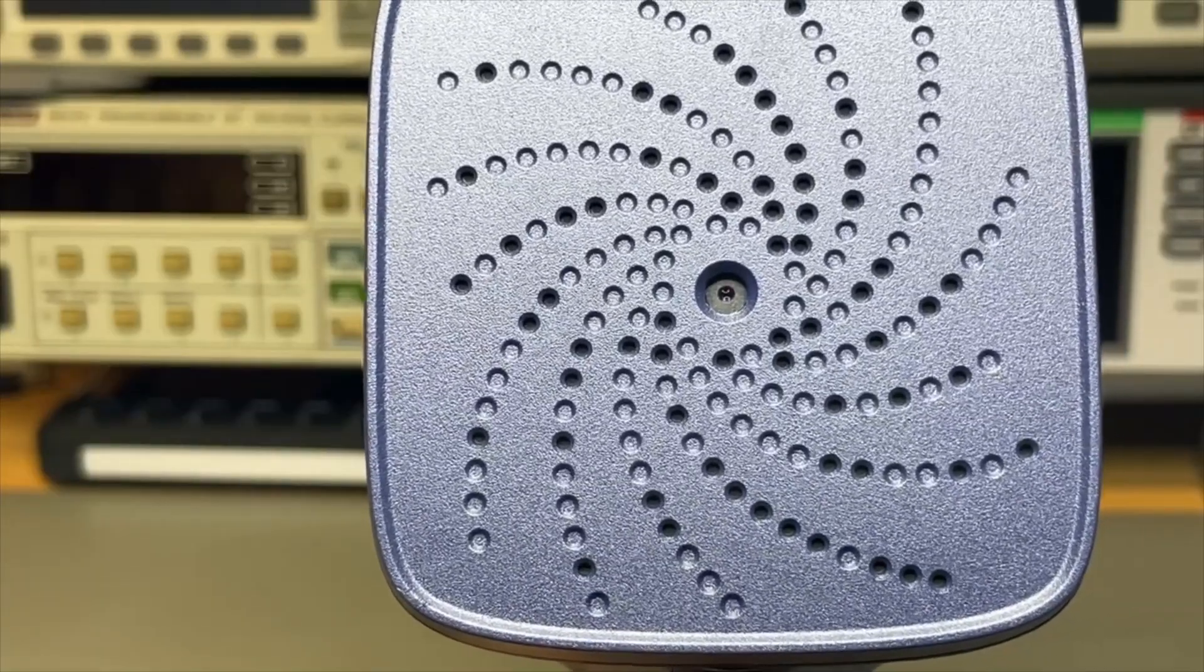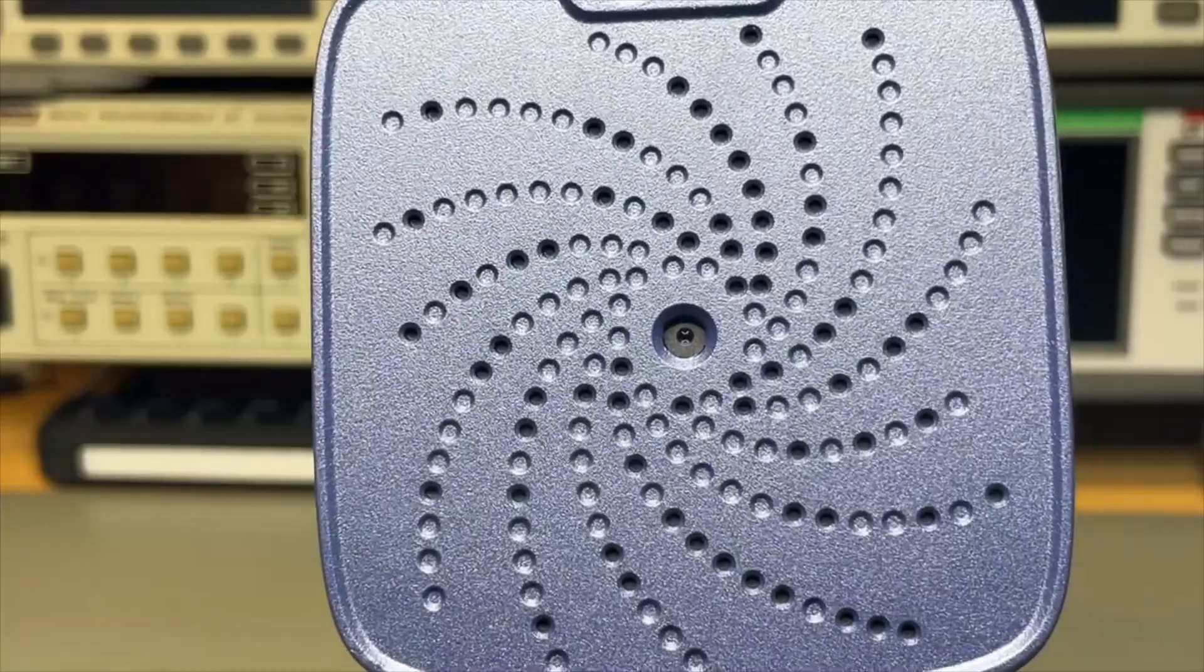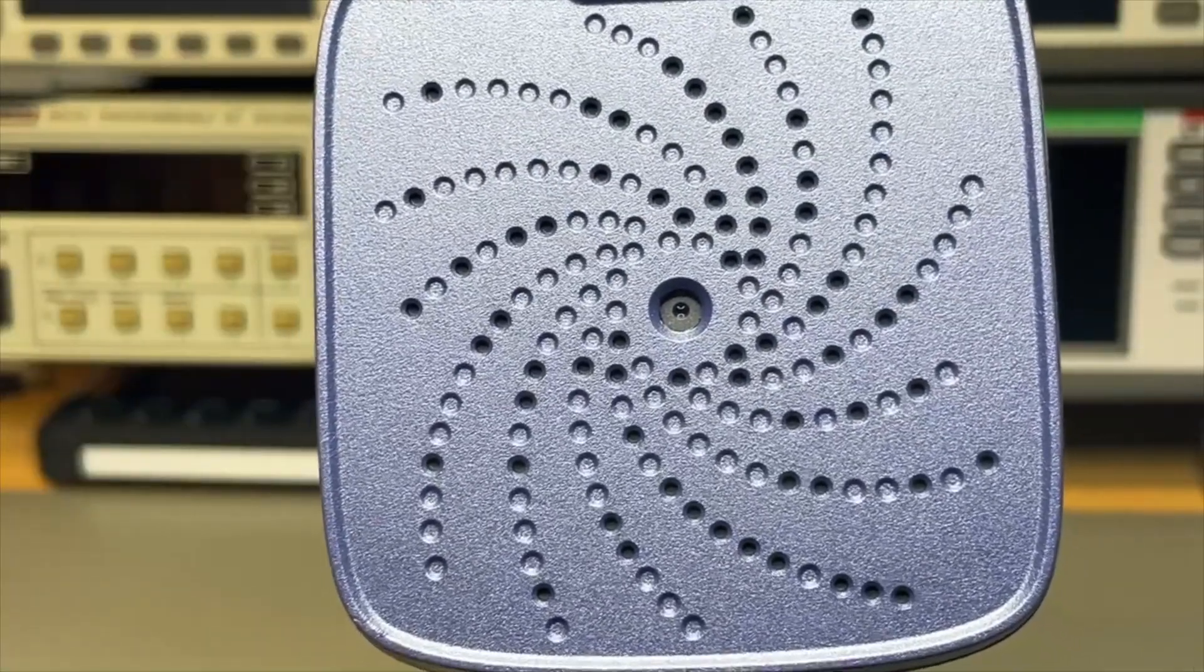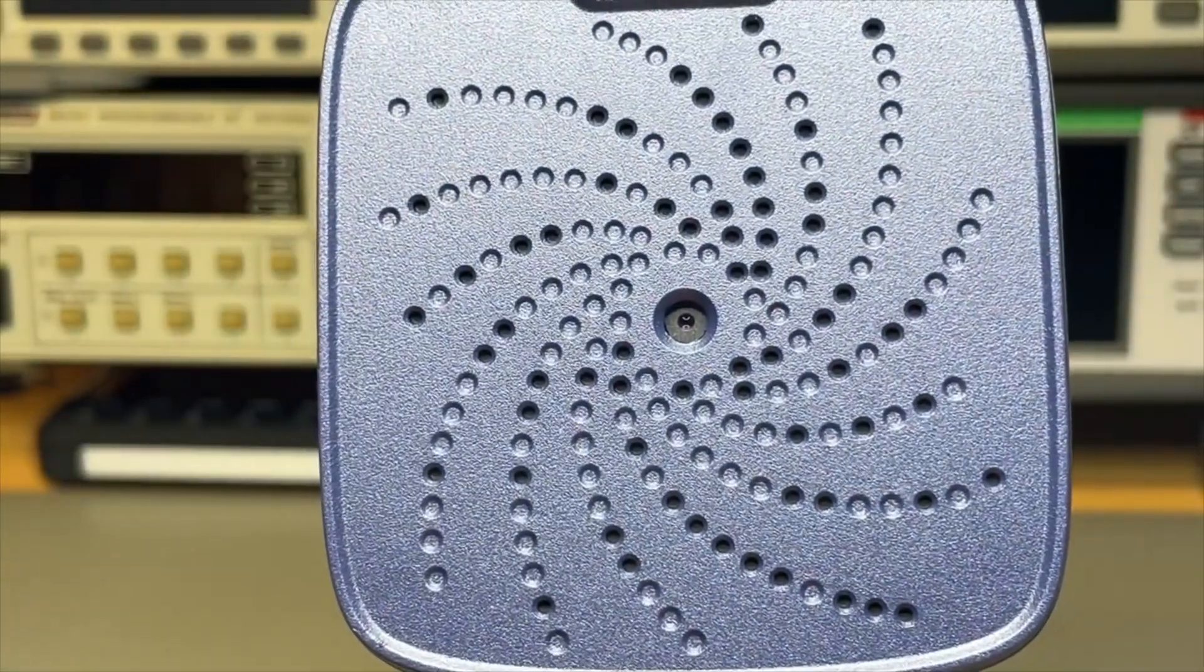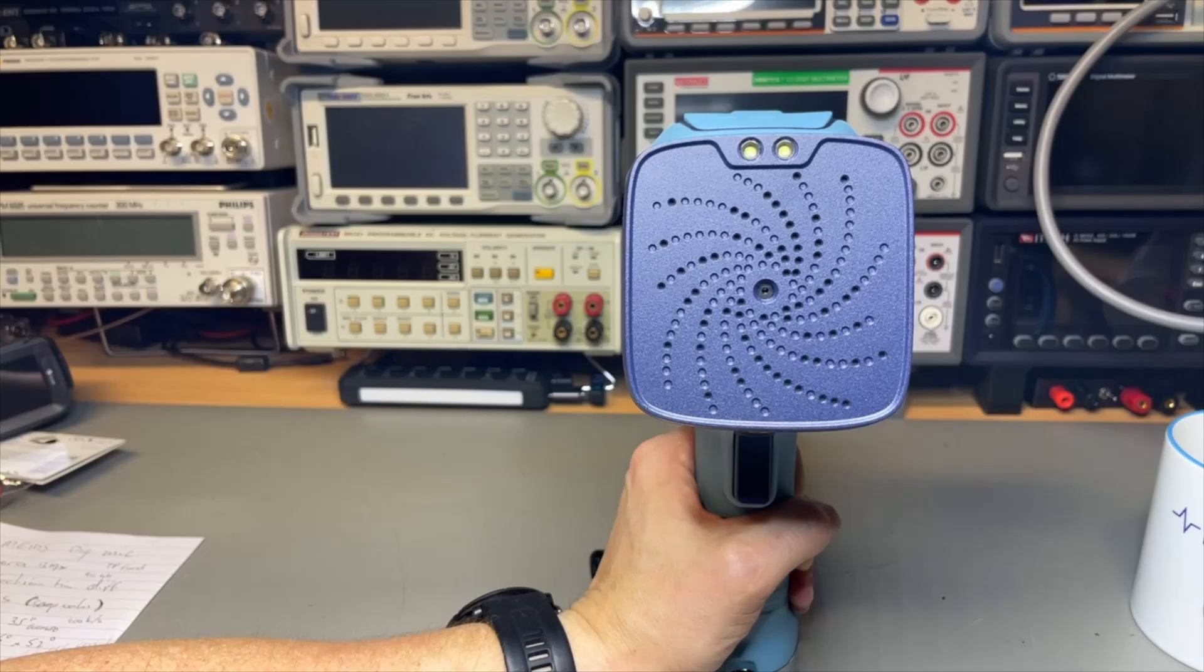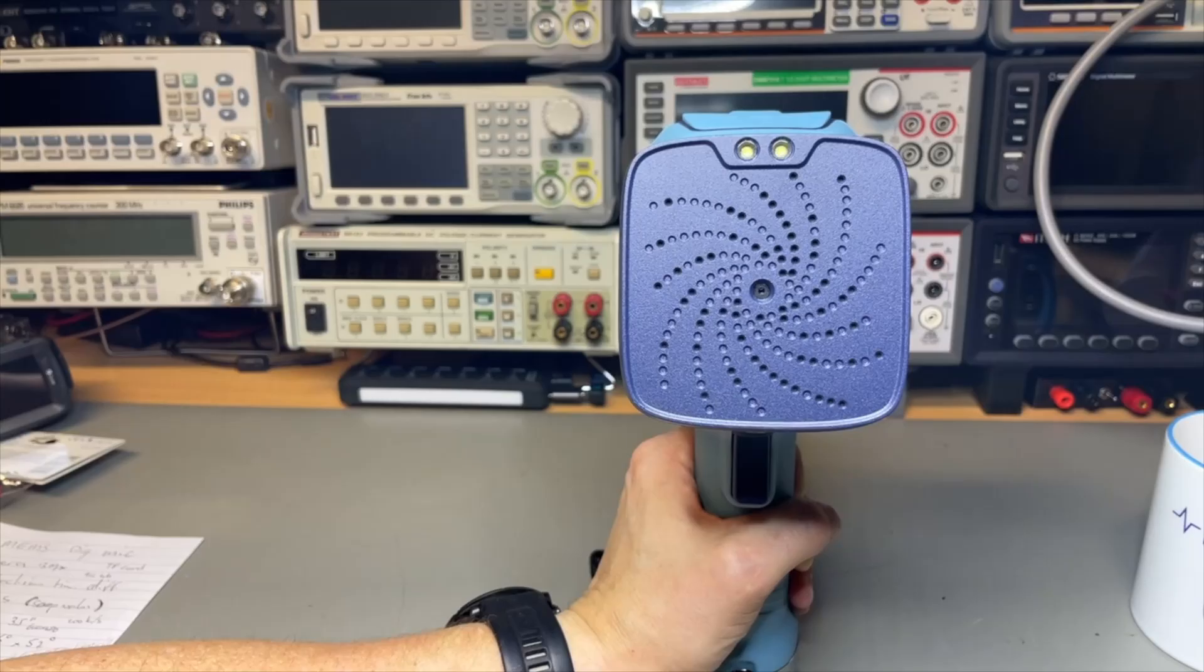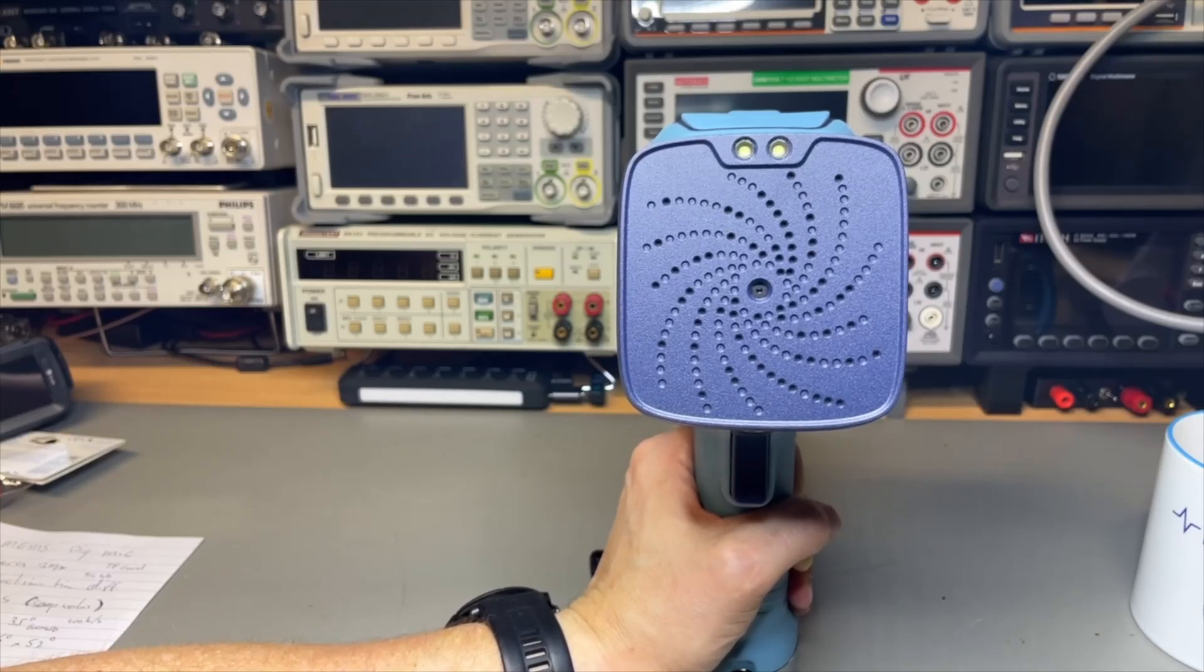That way it can pick up different frequencies from different directions and calculate where the sound is coming from. One sound could have different frequencies and we could have noise from different directions. Combining all this, one sound has a signature with multiple frequencies and different holes can detect where it comes from. It's pretty smart. The detection angle from the microphones in total is 66 by 52 degrees. It can detect from 30 centimeters up to 100 meters.